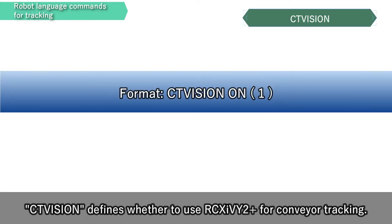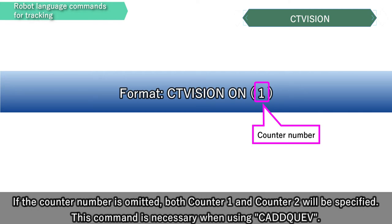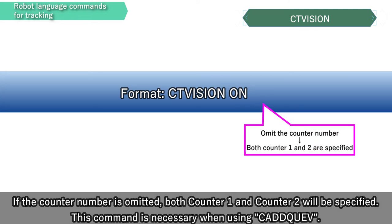CT Vision defines whether to use RCX-IV2 Plus for conveyor tracking. If the counter number is omitted, both counter 1 and counter 2 will be specified. This command is necessary when using SEADQV.